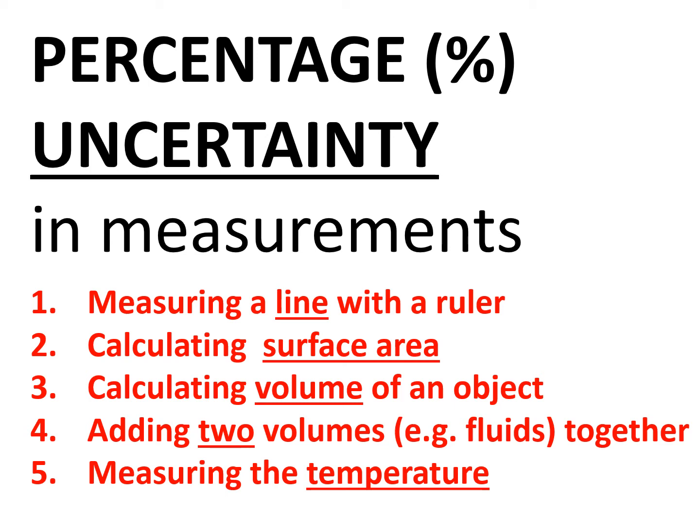In this video we're going to look at calculating the percentage uncertainties in different scenarios. The first one will be to simply measure a line with a ruler and calculate the percentage uncertainty of that measurement. The second will be the percentage uncertainty of a given surface area. Number three, the percentage uncertainty of a volume calculated given the length, width and depth. The fourth will be adding two volumes of different fluids together, and the last will be measuring temperature with a thermometer.